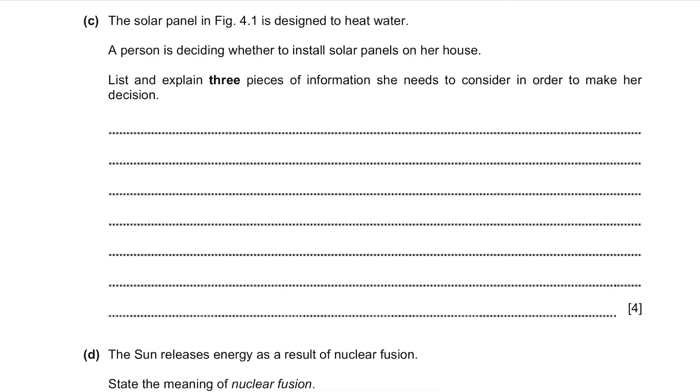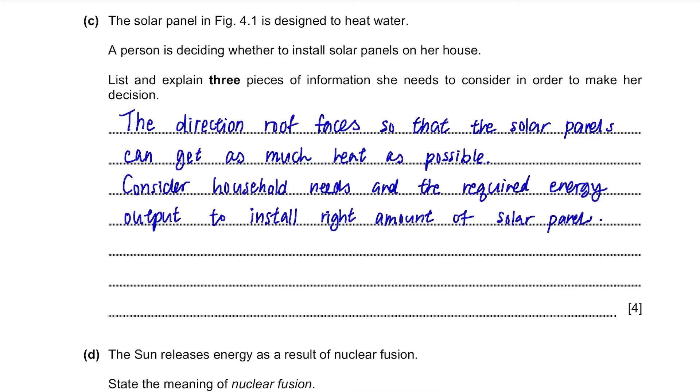Part C. The solar panel in figure 4.1 is designed to heat water. However, a person is deciding whether to install solar panels on her house. List and explain three pieces of information she needs to consider in order to make her decision. So before she installs the solar panels, she'll need to first consider which direction the roof faces in order to get the most amount of sunlight. It should be facing the sun to absorb as much heat as possible. Then she'll also need to think about how much energy she'll need to make hot water. How many people are using them? How often is it going to be used? This is to estimate the required energy output. Also, she needs to consider the cost of installation, whether it is more cost-effective than using the electric heater. This should be viewed in both short-term and long-term perspectives.